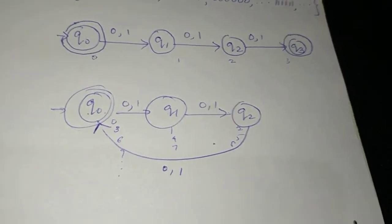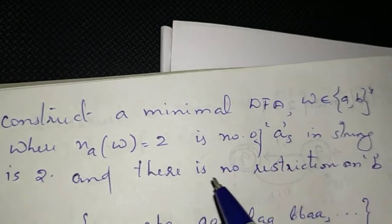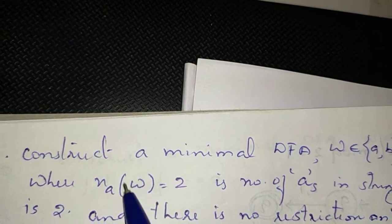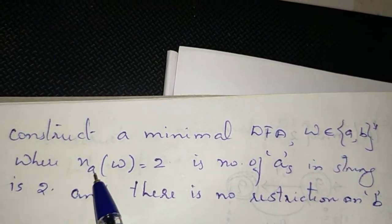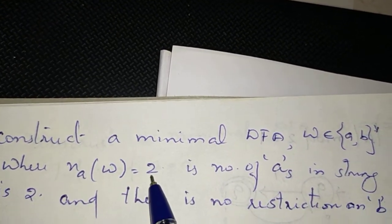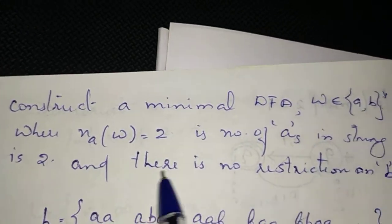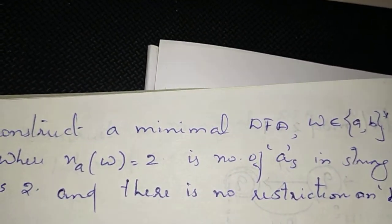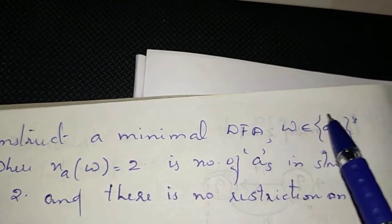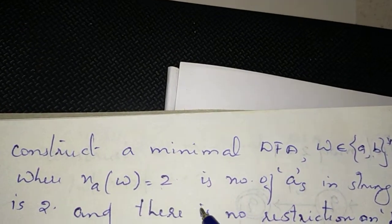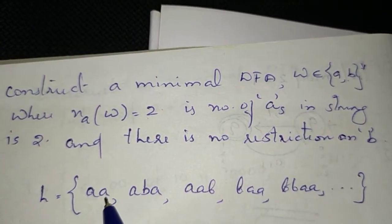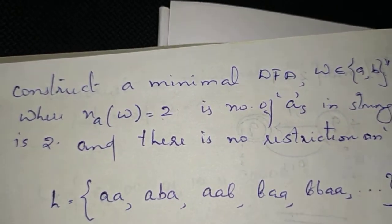Next question: construct a minimal DFA where w belongs to {a,b}* and the number of a's in w equals 2. That means the number of a's in the string is exactly 2. There is no restriction on b. The minimum number of a's is 2a.